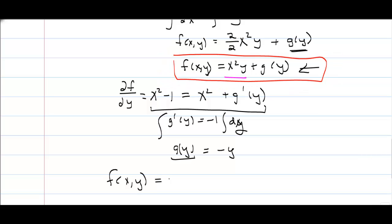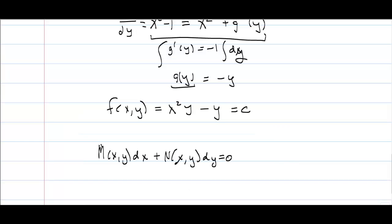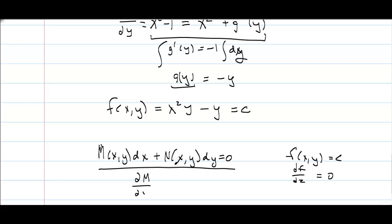Going back to our function, f(x,y) = x²y - y = c. We've been solving a differential equation in the form M(x,y)dx + N(x,y)dy = 0, assuming f(x,y) equals a constant so its derivative equals 0. This method works when the equation is exact — that is, when the partial of M with respect to y equals the partial of N with respect to x. Let's look at another example.